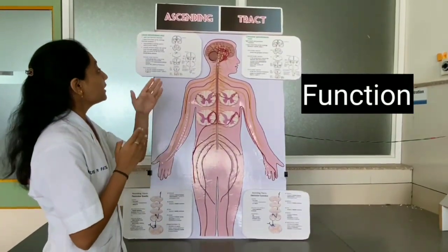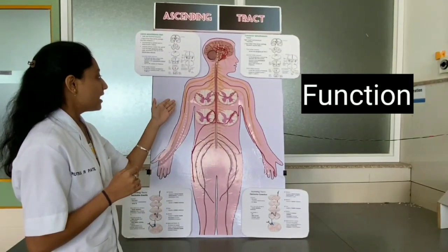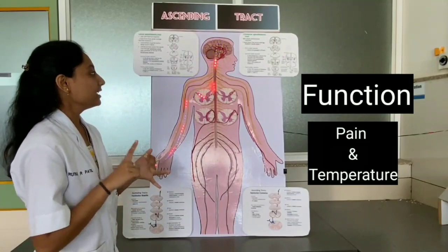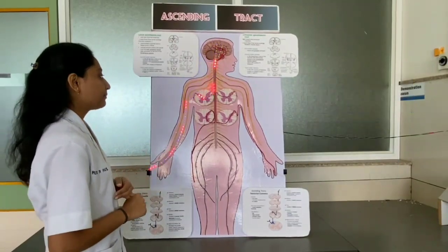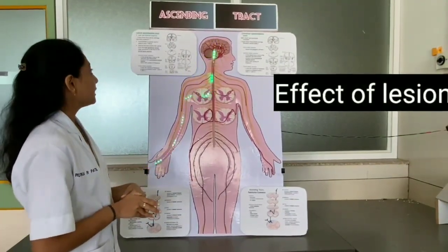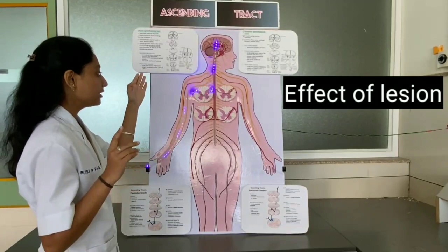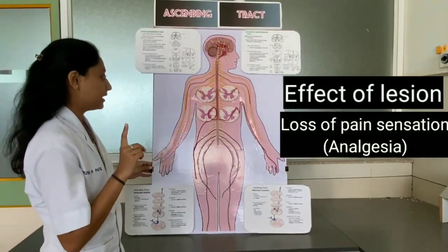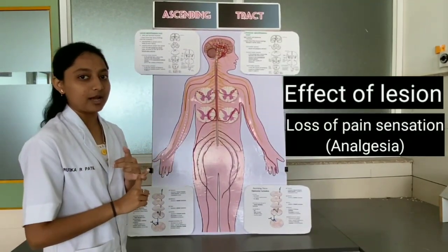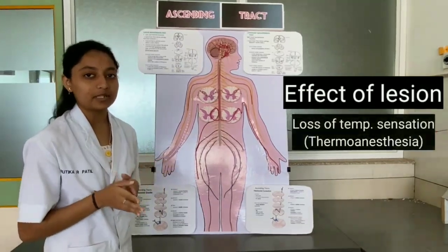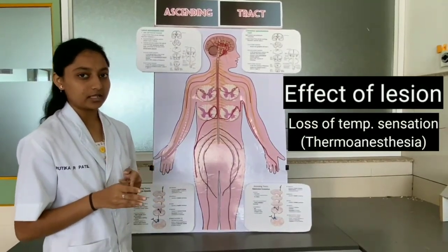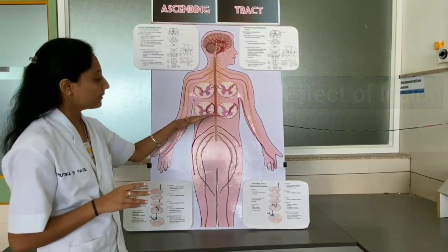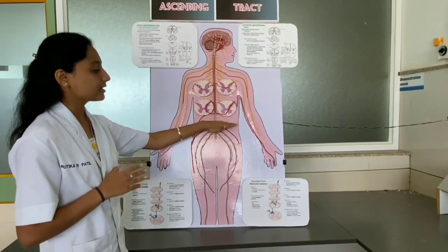Fibers of the lateral spinothalamic tract carry the impulses of pain and temperature. Effect of lesion: fibers of the lateral spinothalamic tract cause a loss of pain called analgesia and a loss of temperature sensation called thermo-anesthesia, below the level of lesion on the opposite side.